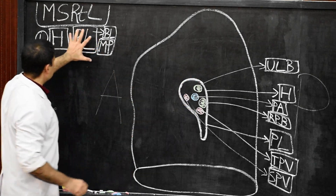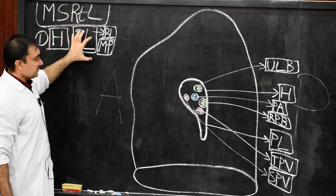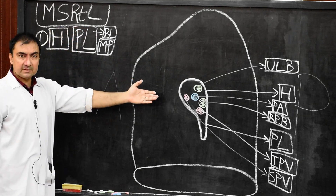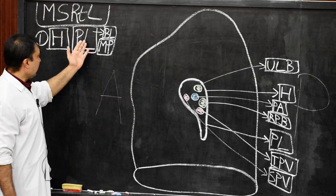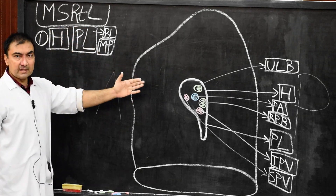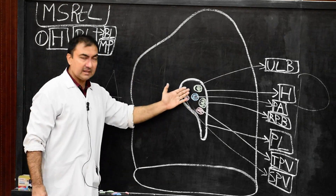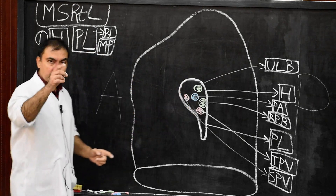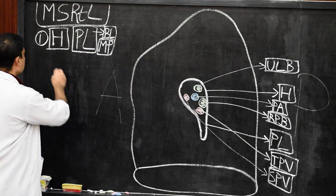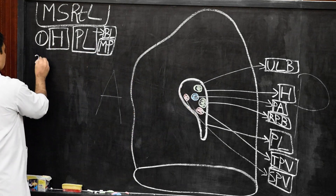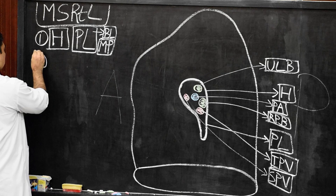We have finished the first point: the hilum, the structures present in the hilum, and the pulmonary ligament. Now the second point — we start with the cardiac impression.